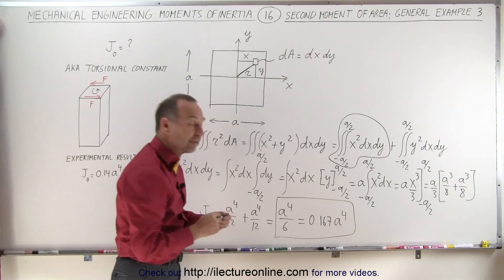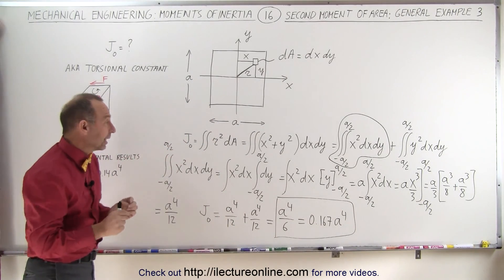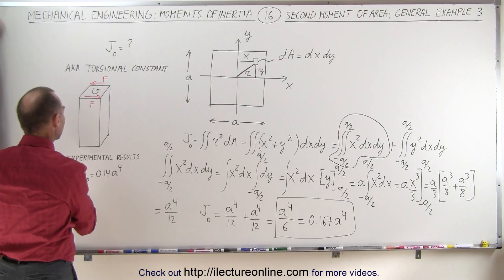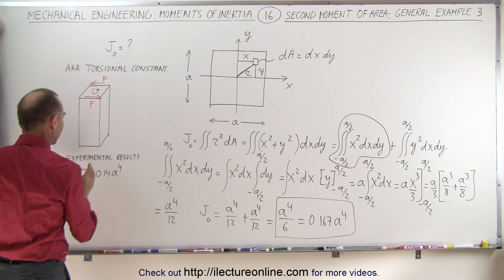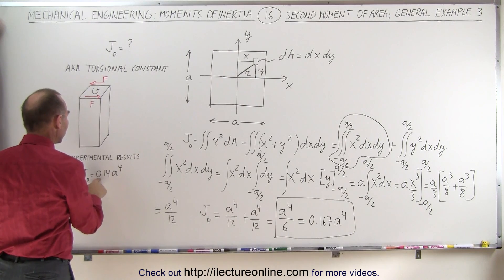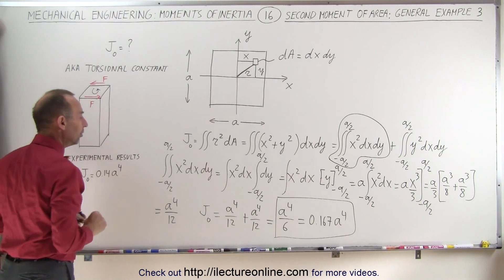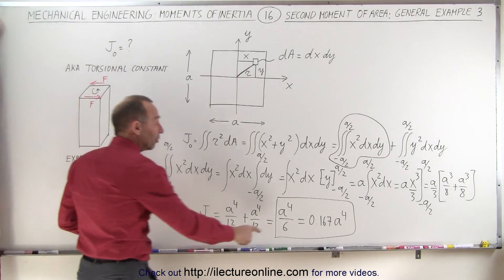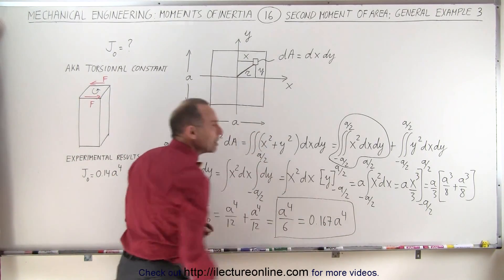The reason why I convert it to a decimal as well is because we know that experimentally, when we measure the torsional constant for something that looks like this, a square pillar with dimensions a by a, we get it to be 0.14 times a to the 4th, and when we calculate it analytically, we get 0.167a to the 4th. So why the discrepancy?